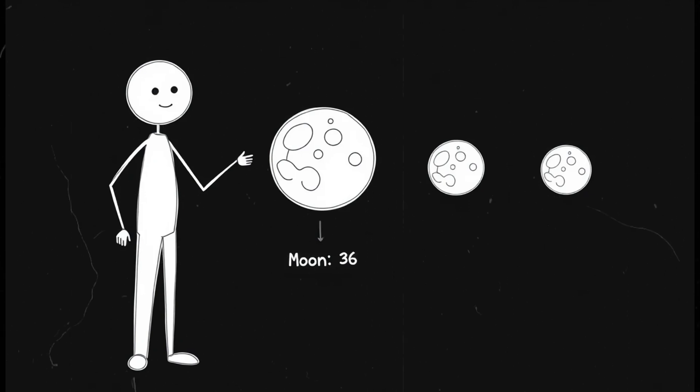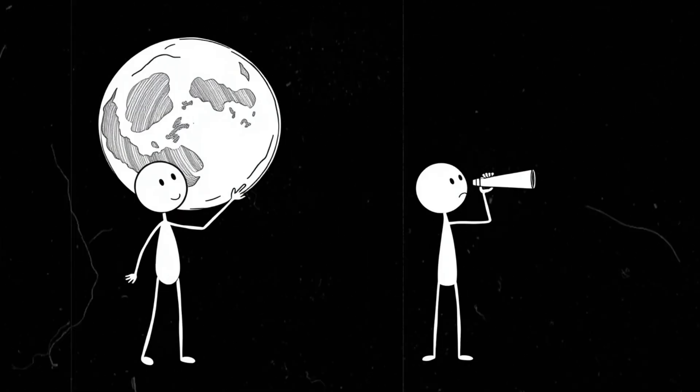If we brought the moon to 100,000 kilometers away, about a quarter of its current distance, it would appear four times larger than it does now. Instead of a tiny, distant orb, you'd see an enormous celestial giant looming over the horizon, detailed enough to spot mountains and craters with your naked eye. It would be breathtaking.